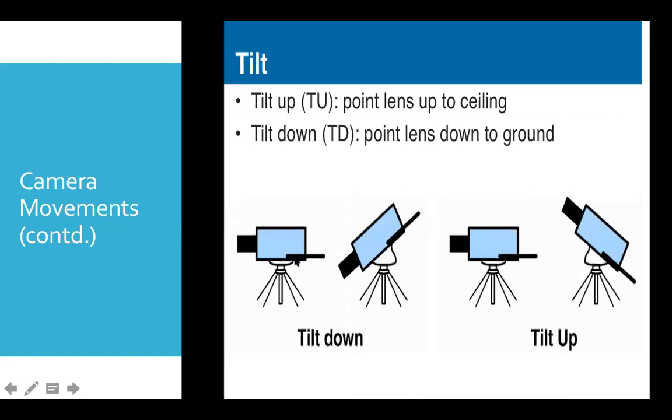You see in this image the camera is tilting down—this is called tilt down movement. Here the camera is mounted on a tripod stand. In this image the camera is tilted up.